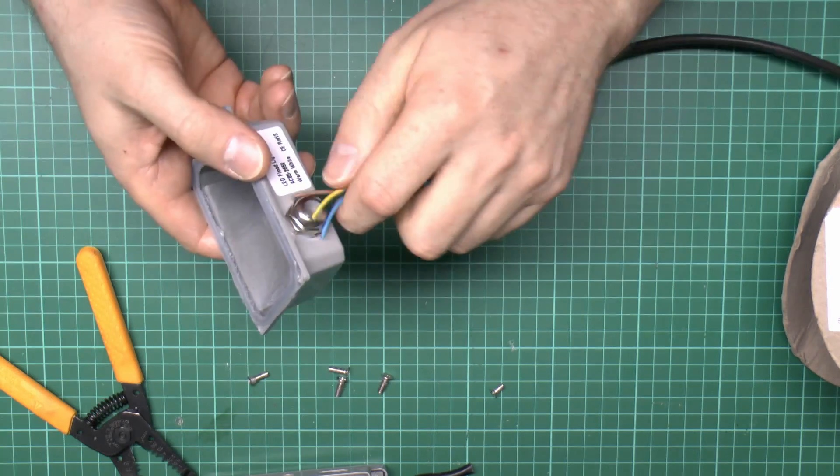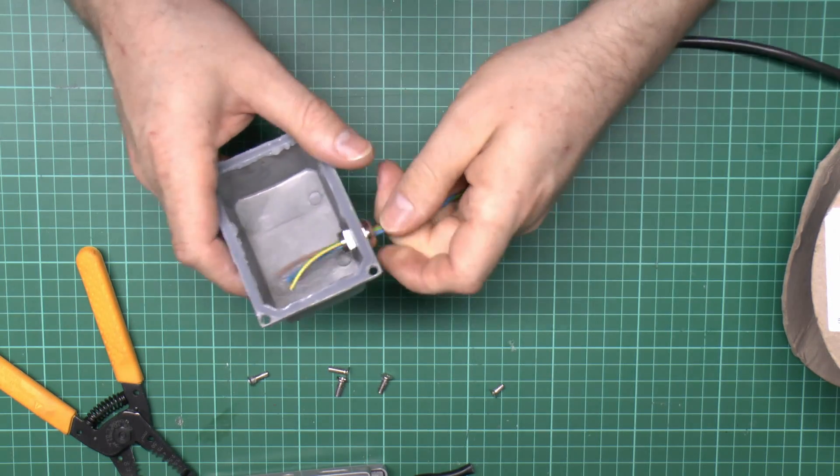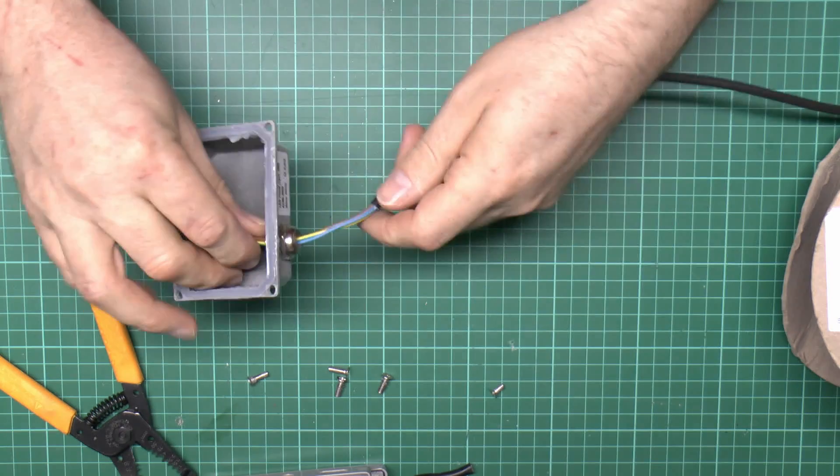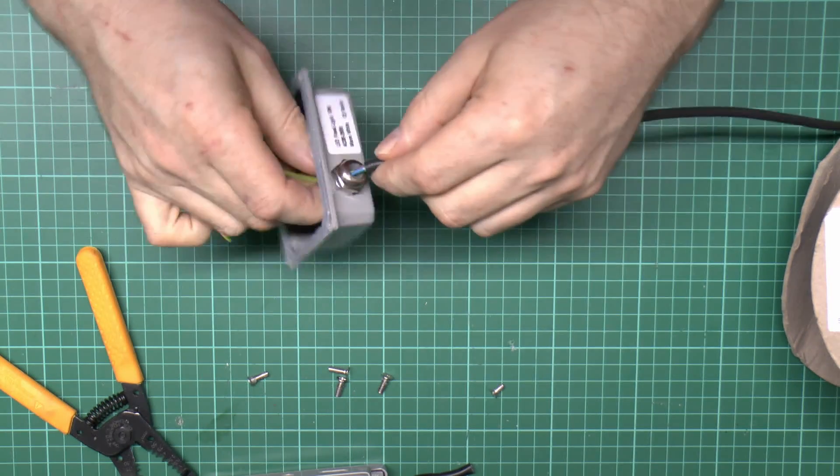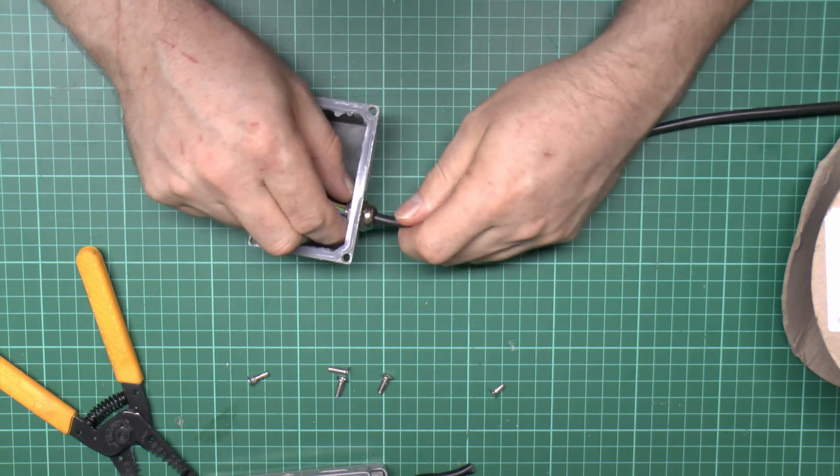We want to thread this through the lid. We could cut the other end and thread that later, but generally it's advisable to thread it through first, particularly if you'd already put something on the other end like a plug or some other connection. Although in this case it will be a permanent installation so it won't be a problem.